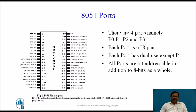If you look at the diagram, the 8051 has 4 ports named P0, P1, P2, and P3. Each port is 8 pins, or 8 bits wide. Each port has dual use except P1 — all ports are used for multiple purposes except P1. All ports are bit addressable in addition to being usable as 8 bits as a whole.